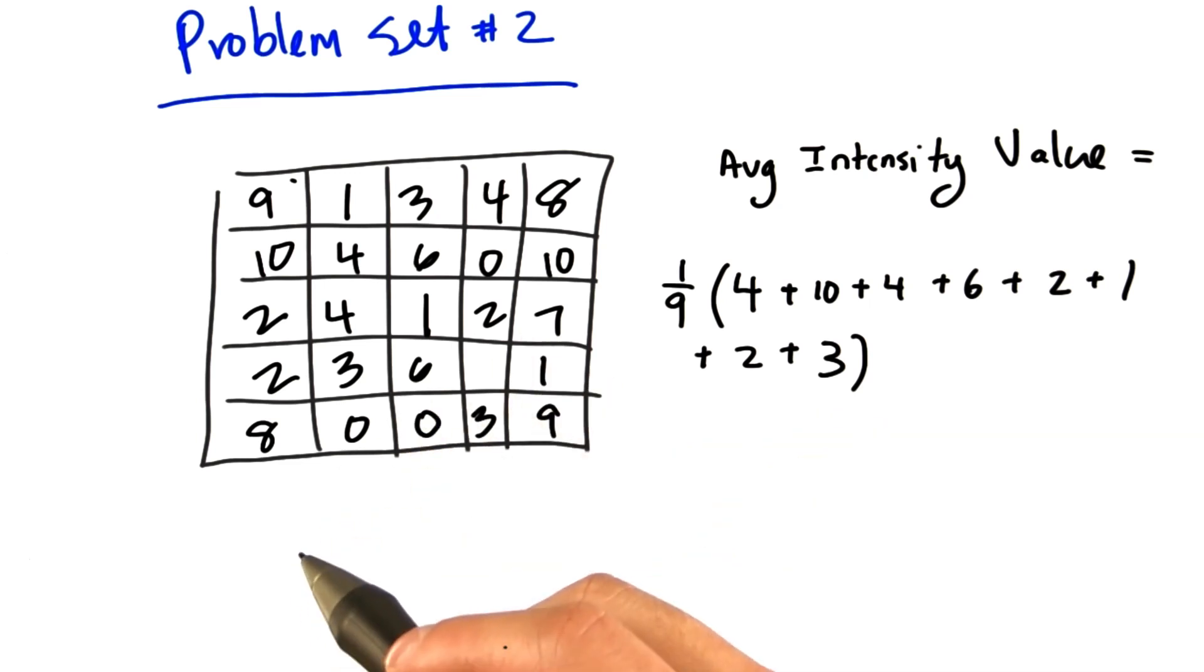it turns out that performing an unweighted average of pixels can sometimes look really ugly. And we can achieve a better looking blur by computing a weighted average of these pixels. And what I mean by weighted average is the following.